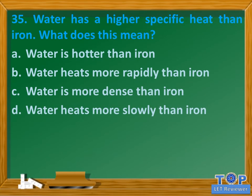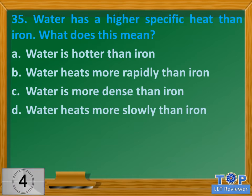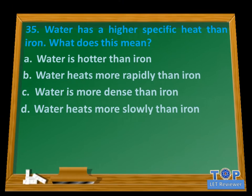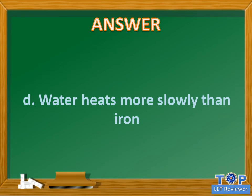Question number 35. Water has a higher specific heat than iron. What does this mean? A. Water is hotter than iron. B. Water heats more rapidly than iron. C. Water is more dense than iron. D. Water heats more slowly than iron. Answer: D. Water heats more slowly than iron.